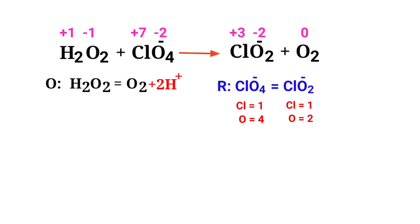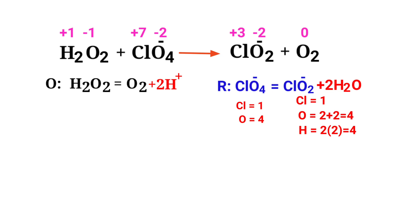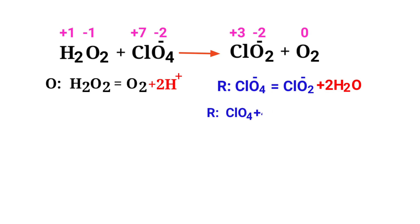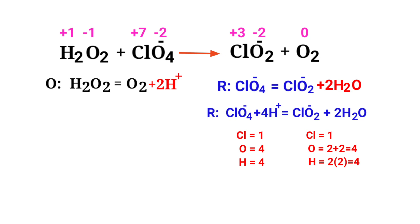Now balance the number of atoms in the reduction half reaction. To balance the oxygen atoms you can add water molecules, and to balance the hydrogen atoms you can add H plus ions. The number of atoms are now balanced in the reduction half reaction.